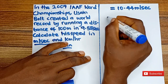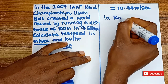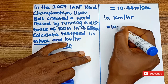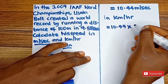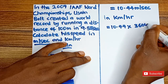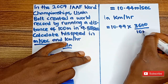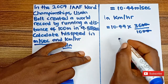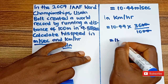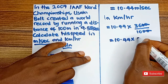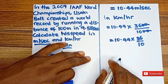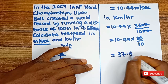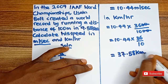So in order to get it in kilometers per hour, it's going to be 10.44 multiplied by 3600, all over 1000. So our final answer is going to be 37.58 kilometers per hour. That's very fast.